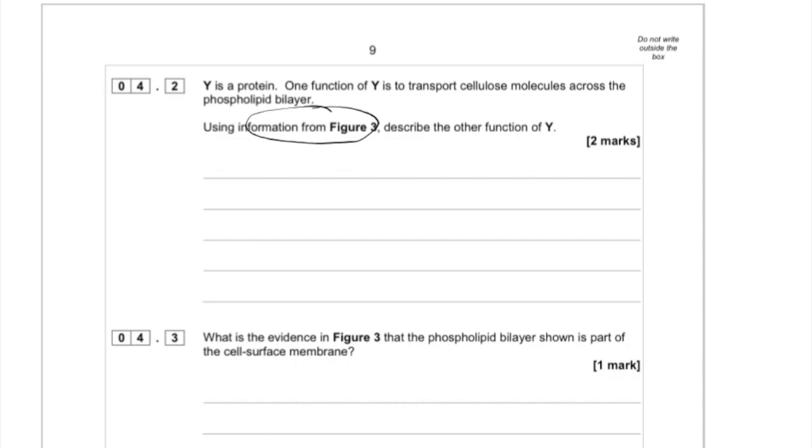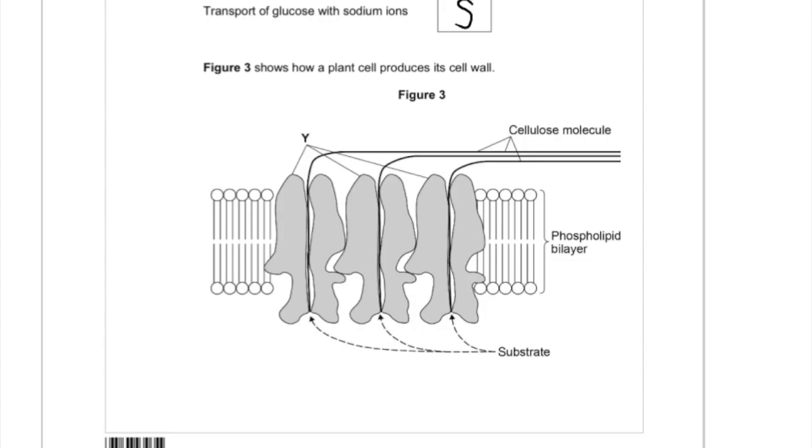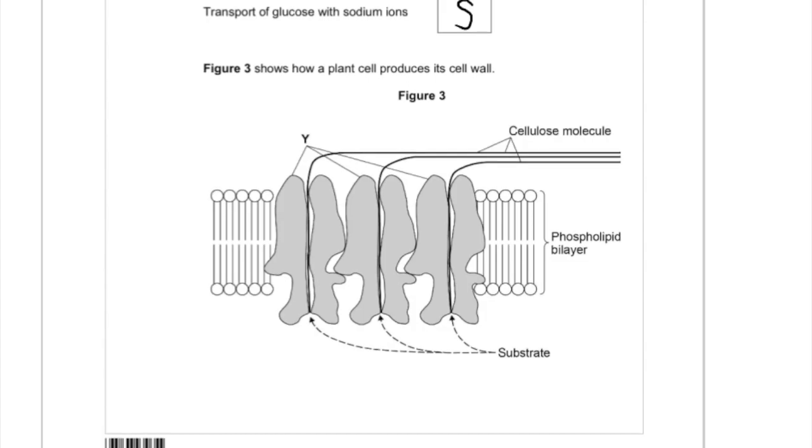Now the reason students went wrong in this, and this was a very poorly answered question, is because they didn't actually use information from figure three. So if we have a look at figure three, now that I've told you that, you'll see that we've got a substrate and we've got cellulose.